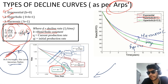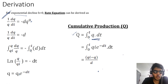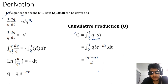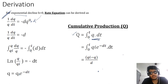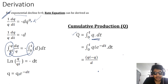For exponential decline, b is equal to zero. Putting b equal to zero into the equation and integrating from zero to time t — at time t equals zero we have qi, and for time t equal to t we have q — we get the exponential decline equation.